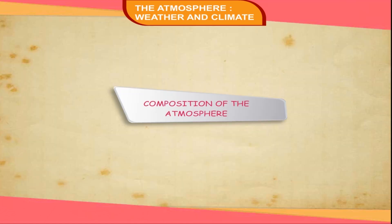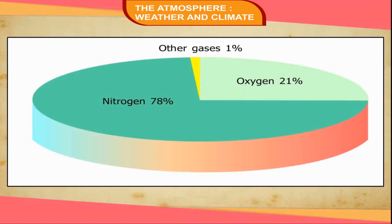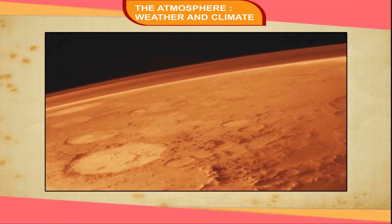Composition of the Atmosphere. Air is a mixture of several gases in different proportions. The composition is: Nitrogen 78%, Oxygen 21%, and other gases 1%. Some dust particles are also present in the atmosphere.